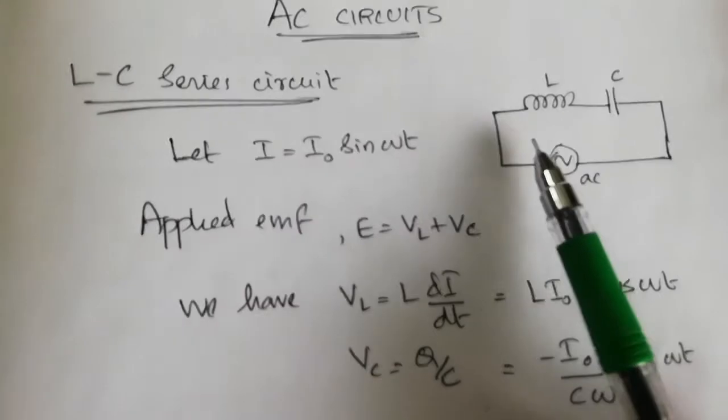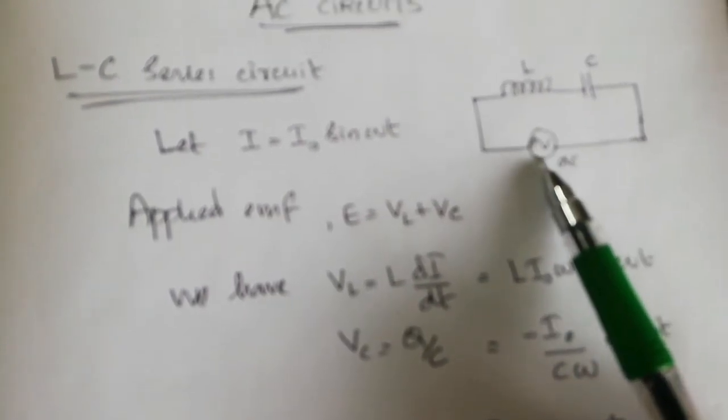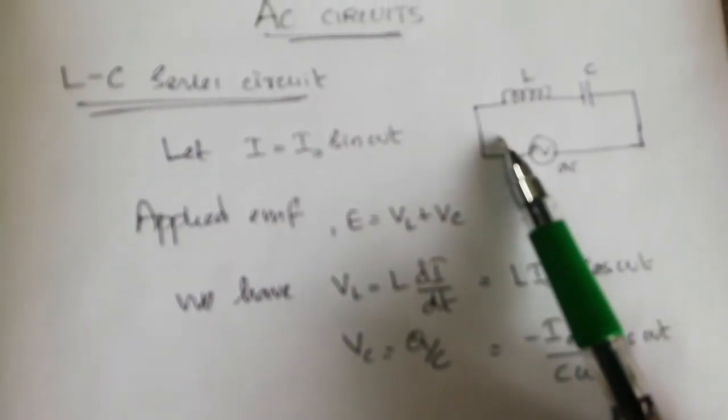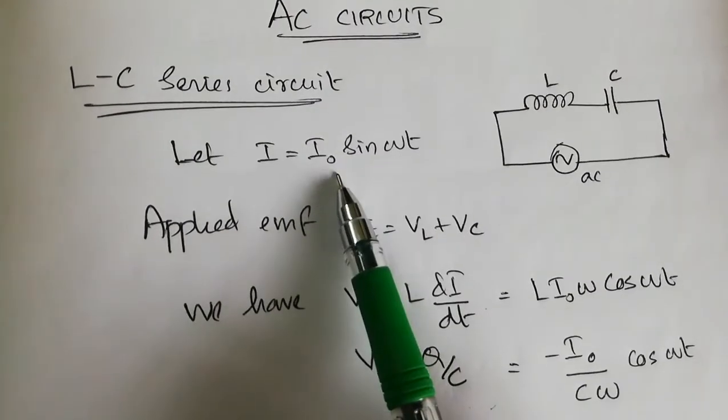For that, consider an inductance and a capacitance are connected in series with an alternating EMF and an alternating current is passing through this circuit, that is I equals I0 sin omega t.